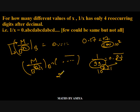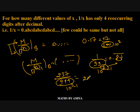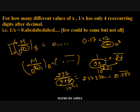If I say 237 upon 999, we have 999 is nothing but 10 cubed minus 1, so 3 digits reoccurring is 237 — that is 0.237, 237 and so on, which is nothing but 0.237 reoccurring. So if you have 3 digits reoccurring in base 10, the denominator should be 999.